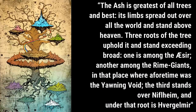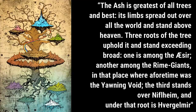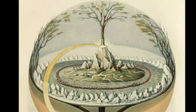'The ash is greatest of all trees and best. Its limbs spread out over all the world and stand above heaven. Three roots of the tree uphold it and stand exceeding broad. One is among the Aesir, another among the Rhyme giants, in that place where aforetime was the yawning void. The third stands over Niflheim, and under that root is Vergilmir.' You've seen this before. Look closer — a circular rim of mountains.